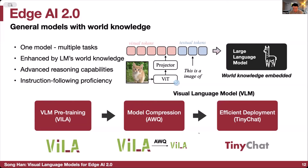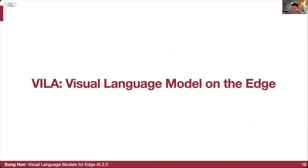That can compress a big VILA to a small VILA with only 4-bit. Finally, I'll introduce an efficient deployment engine called TinyChat that can deploy the visual language model VILA and other large language models on mobile devices. Let's start with VILA, the visual language model on the edge.